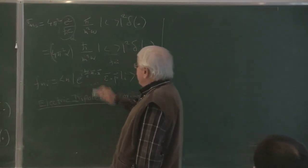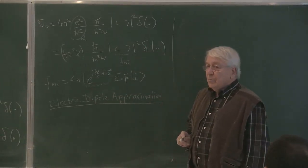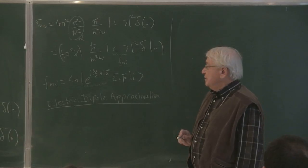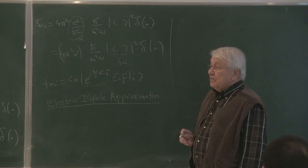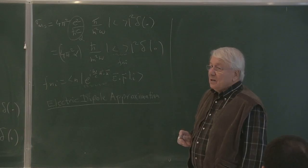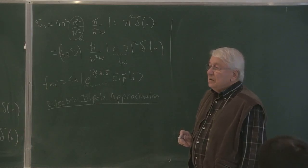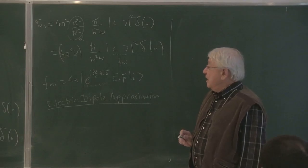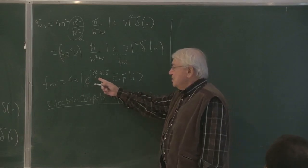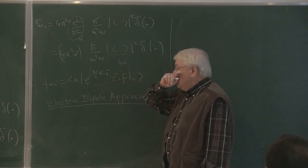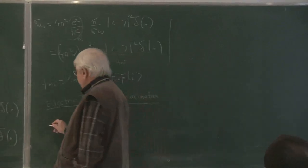The major issue is that that operator is a very complicated operator. So if we can replace it with a simpler thing — what is the simplest thing? The identity operator directly — then life becomes very easy. Let's see why we can, under certain circumstances, replace this horrendous operator with the identity operator directly.